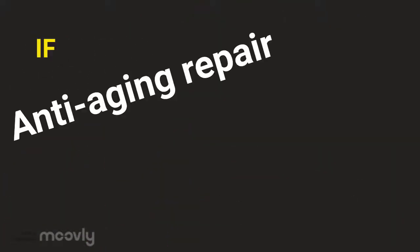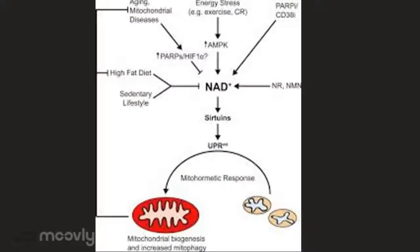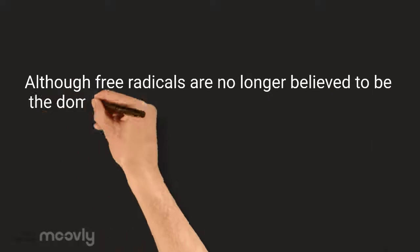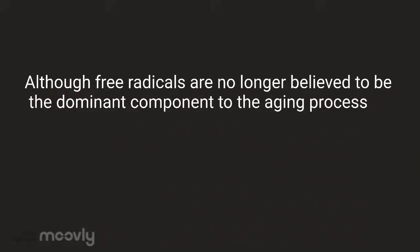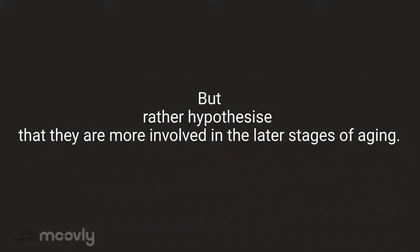However, if anti-aging repair and therefore lifespan were limited by resources such as food, then increased food consumption would extend lifespan, which is the antithesis of what has been shown in numerous studies looking at the effect of calorie restriction on aging. Although free radicals are no longer believed to be the dominant component of the aging process, not all of today's theories have disregarded their contribution, but rather hypothesized that they are more involved in the later stages of aging.